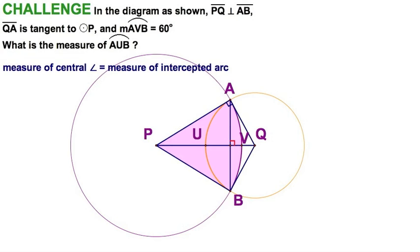To measure the central angle, if this is 60 degrees, well, then so is this. This central angle, that would be APB. So APB is 60.